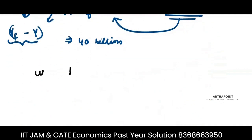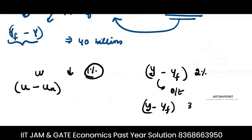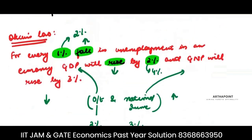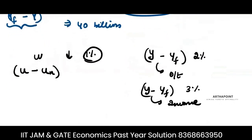Let's recap: whenever unemployment decreases by 1% — meaning the unemployment gap (U minus UN) is 1% — then if Y represents output (GDP), Y minus YF will be 2%; and if Y represents national income (GNP), Y minus YF will be 3%. Remember: GDP is always output, and GNP is always national income or national product. Use this formula to find the answer.